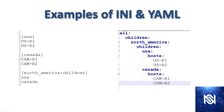Here we have examples of the INI method and the YAML method, and effectively these two examples accomplish the same thing. The INI method is on the left and the YAML method is on the right. Each of them have two groups of devices — USA and Canada — each containing two hosts, and each of those are children of the North American group. These are both examples of static inventory files, meaning they're manually defined rather than dynamically defined.